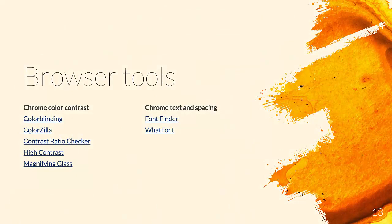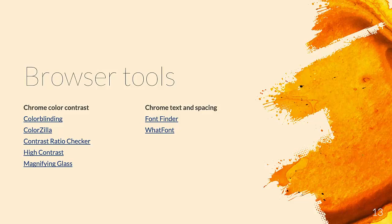Here are some browser tools. Color Blinding is a great tool — it shows you what it's like to be color blind in different forms. There are several different kinds: grayscale, and the most popular which is red-green, plus about five or six different kinds total. If you want to test color contrast on your website and whether it's going to look okay, you can use the Color Blinding tool.